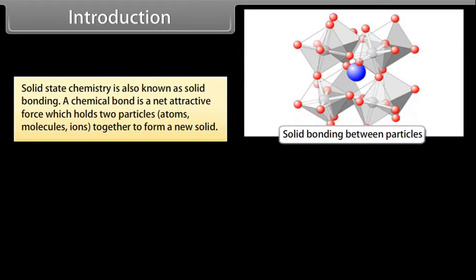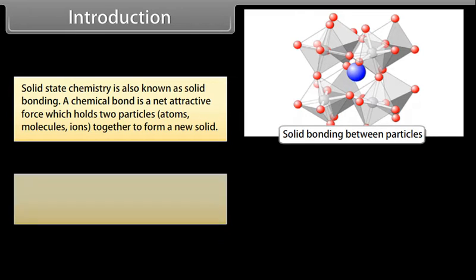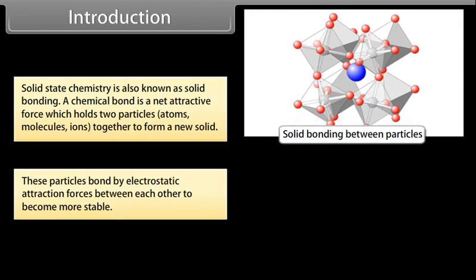Solid state chemistry is also known as solid bonding. A chemical bond is a net attractive force which holds two particles, atoms, molecules, ions together to form a new solid. These particles bond by electrostatic attraction forces between each other to become more stable.